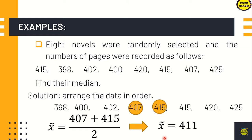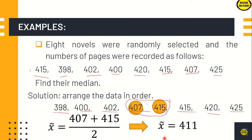Another example: 8 novels were randomly selected and the numbers of pages were recorded as follows — 415, 298, 402, 400, 420, 415, 417, 425. Find their median. Arrange the data in ascending order: 398, 400, 402, 407, 415, 415, 420, 421. We have 8 elements, so we add the two middle values: 407 + 415 divided by 2 equals 411. That is the median score.